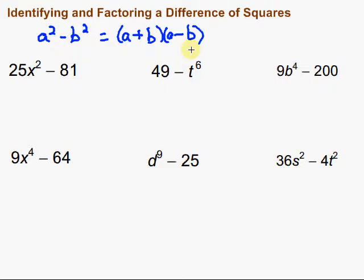To identify a difference of squares, we want to first look and see that there's a difference of our two terms within our binomial. Then we look for the first term being a perfect square and the second term being a perfect square. If that's the case, then we have a difference of squares and we know it's going to factor just like this.